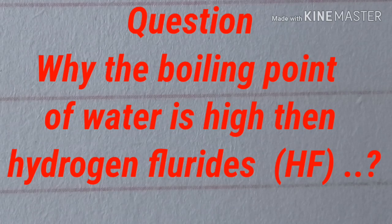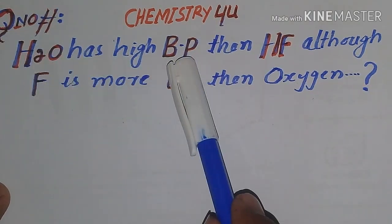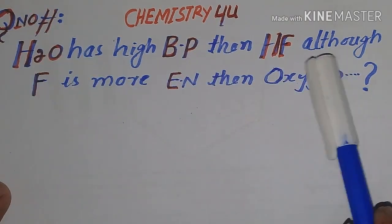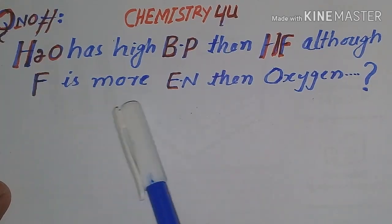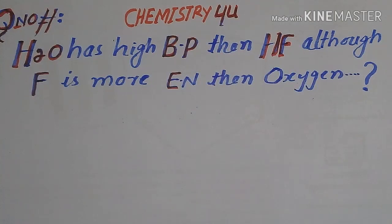Hello ladies and gentlemen, today I am discussing a very interesting question: H2O has a higher boiling point than HF, although fluorine is more electronegative than oxygen. How is this possible? Because fluorine has more electronegativity, then why is the boiling point of H2O greater than the HF molecule?